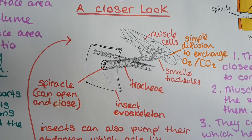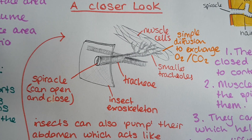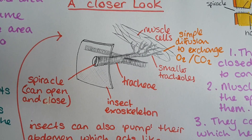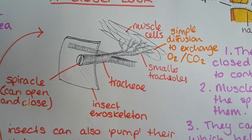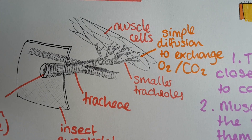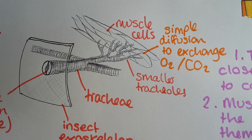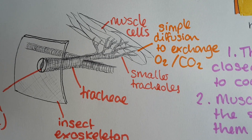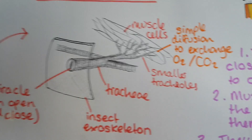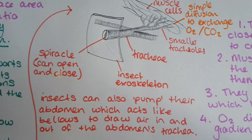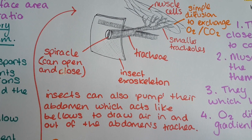Having a closer look, you can see the spiracle on the outside of the exoskeleton. Spiracles can open and close to allow oxygen in and carbon dioxide out. Behind the spiracle are these long tubes called tracheae, which extend all around the body of the insect. Finally, these small tracheoles are attached to the muscle cells, and that is where you get the exchange of oxygen and carbon dioxide between the tracheoles and the cells. You are literally getting oxygen to the cells directly from the atmosphere and carbon dioxide diffusing out, so it totally relies on simple diffusion.